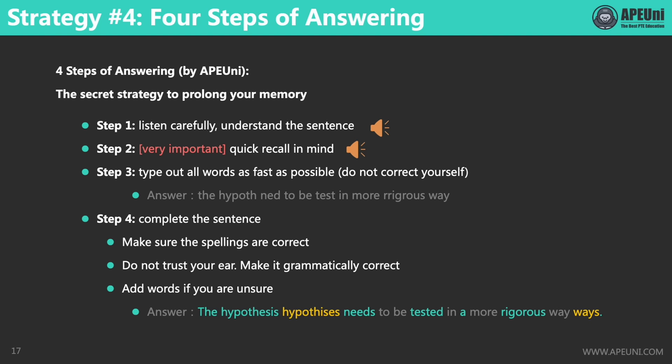'Test' should be changed to 'tested', because a past participle is required after the auxiliary verb 'be' to express passive voice. Before the phrase 'more rigorous way', there should be an indefinite article 'a', because 'way' is a singular countable noun. But if you're not sure whether the speaker said 'way' or 'ways', you can write both forms in your answer. And if you're almost not sure of the spelling of 'hypothesis', you can add one more word with another possible spelling. Make sure you practice a lot and follow these four steps of answering — this can guarantee you receive the maximum number of points in WFD.